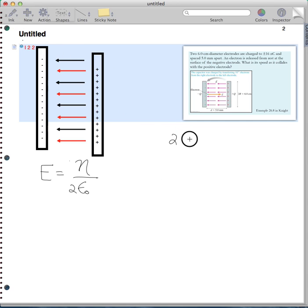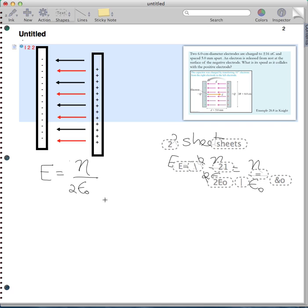So for two sheets of charge, we have E is equal to two times eta over two epsilon zero. Two's cancel and we're left with, for a parallel plate capacitor, we're left with E, the electric field is eta, the surface charge density over epsilon zero.